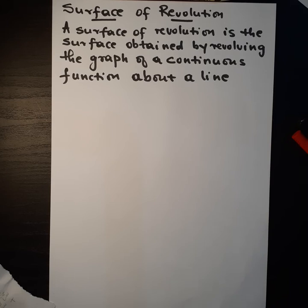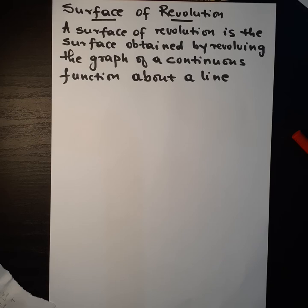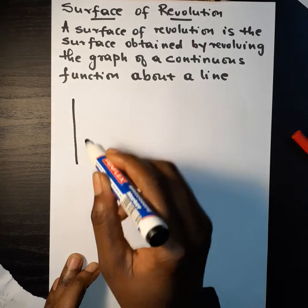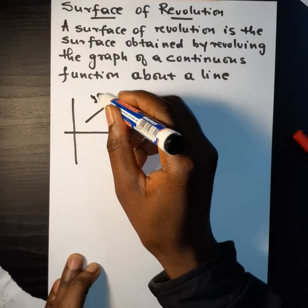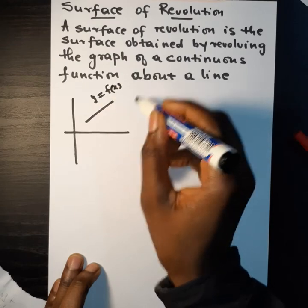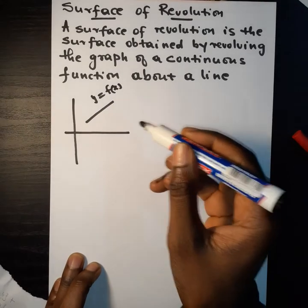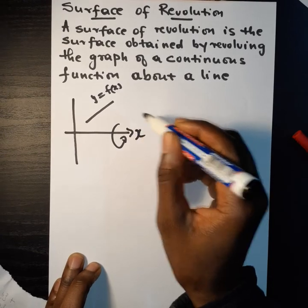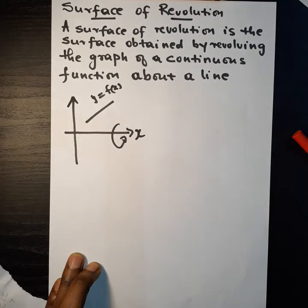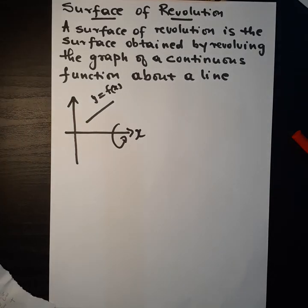Let us discuss surface of revolution. A surface of revolution is the surface obtained by revolving the graph of a continuous function about a line. For instance, if we have a straight line like this, y equal to f of x, which is continuous.